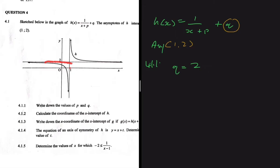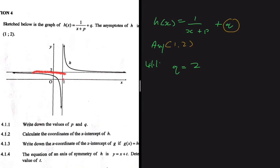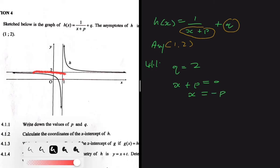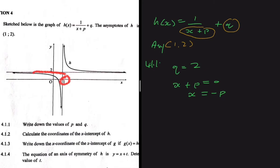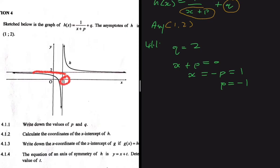Now we're looking for p. In the equation of the hyperbola we have x + p, so to find p we set x + p = 0, giving x = -p. From our graph the vertical asymptote is at x = 1, so -p = 1, which means p = -1. Therefore q = 2 and p = -1.